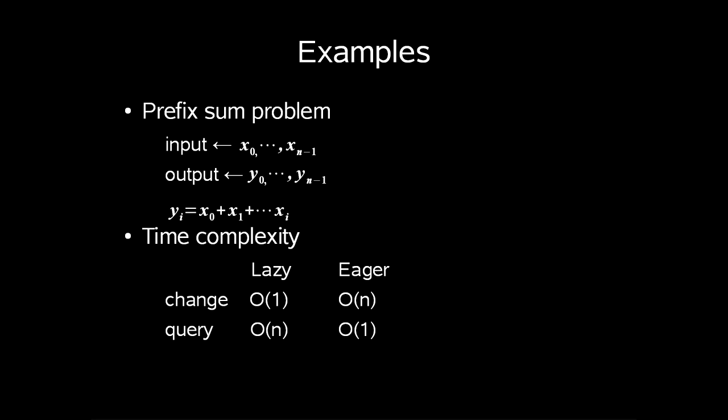When we want to describe the complexity of our algorithm in an algebraic problem, we count the arithmetic operations. In an example called prefix sum problem, we are given some input and are to calculate some output, where each index in our output is calculated as x0 plus x1 up to xi.